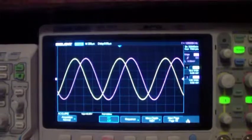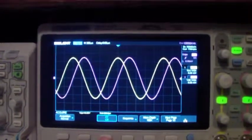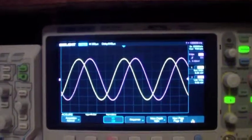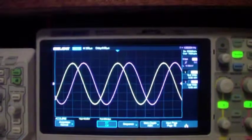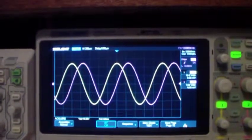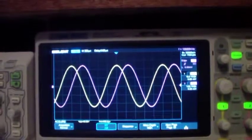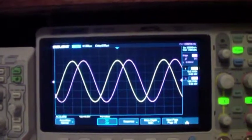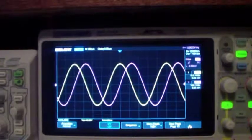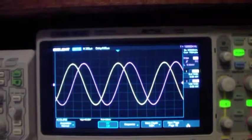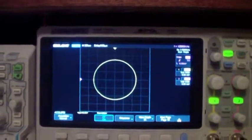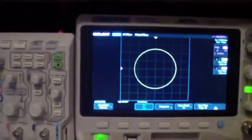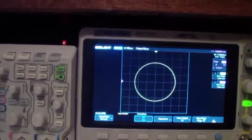All it really amounts to is instead of plotting time on the horizontal, you plot the other channel. So channel 1 is plotted in the y-direction and channel 2 is plotted in the x-direction, and that looks like this.